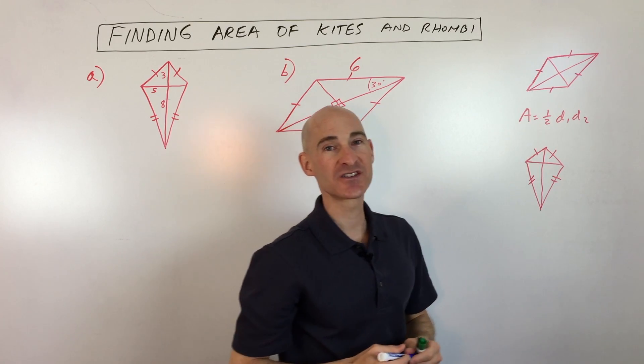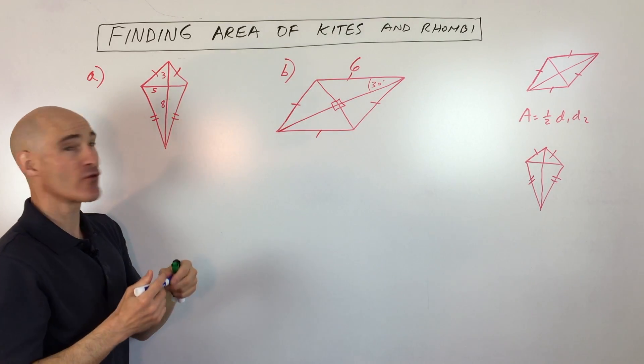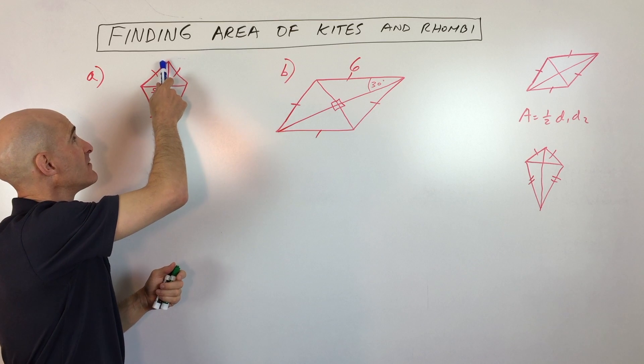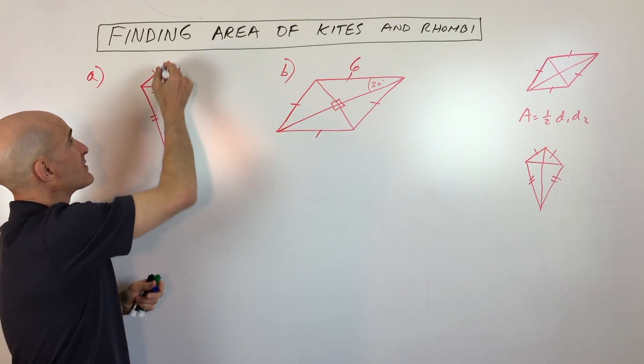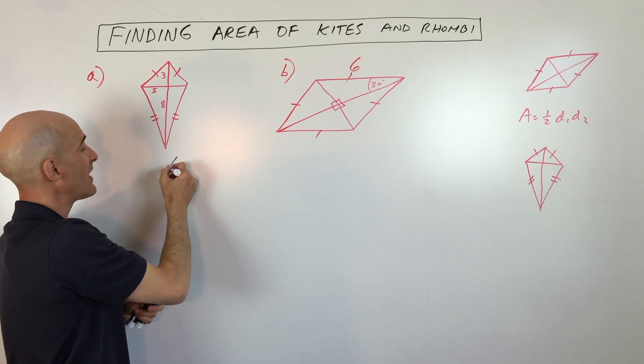Let's look at a couple examples, you'll understand a little bit better how this works. Say like this first one over here, we want to find the area, right? So we have to take this whole diagonal which you can see is going to be three plus eight, so that's eleven.